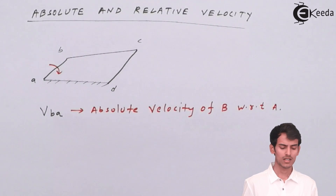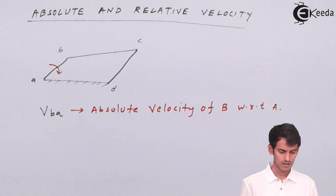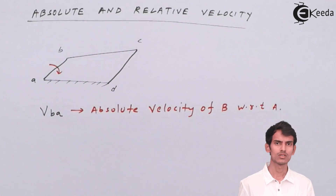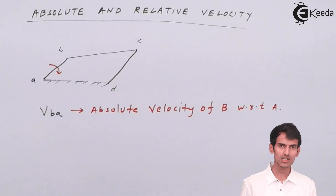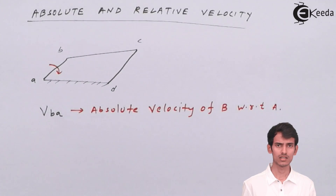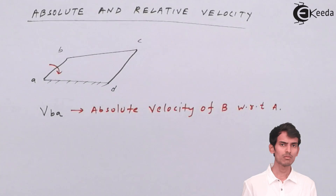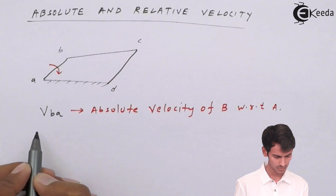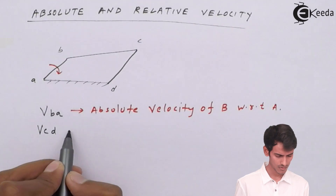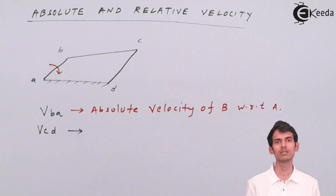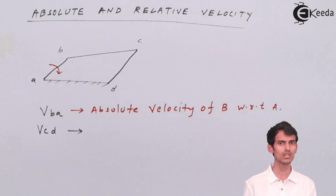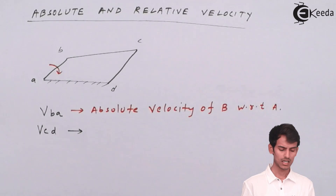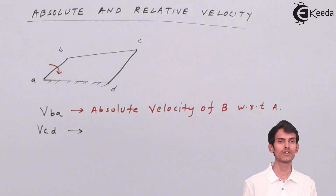Now let's go to point C. Velocity of point C with respect to D — since D is a fixed point, velocity of any point with respect to a fixed point is absolute velocity. So VCD means velocity of C with respect to D, and it is absolute velocity because point D is fixed.